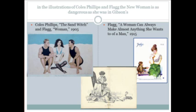Gibson had already portrayed the dangerous sexual power of the Gibson Girl, who reduced men to tiny pawns in her hands. This was continued in later magazine illustrations by James Montgomery Flagg and Coles Phillips. One Phillips illustration is a play on the word 'witch' — the woman is sandwiched between two men but is also demonic. Another image identifies the woman with snakes and untamable beasts, with a caption reading: 'A woman can always make almost anything she wants to of a man.'